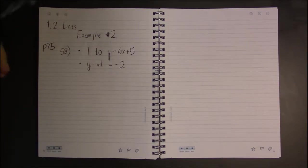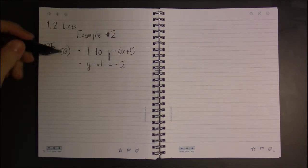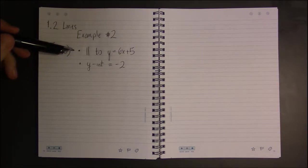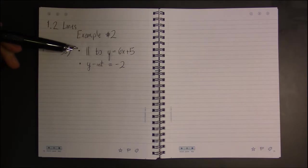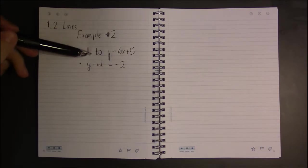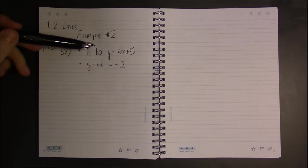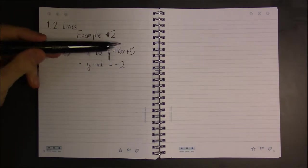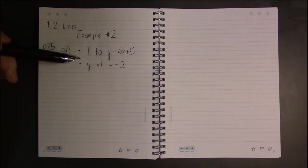Alright, let's finish off section 1.2 by looking at one more set of examples. So I'm on page 75, looking at problem 58. We're asked to find the equation of the line which satisfies the following two properties: first, our line should be parallel to the line y equals 6x plus 5, and...